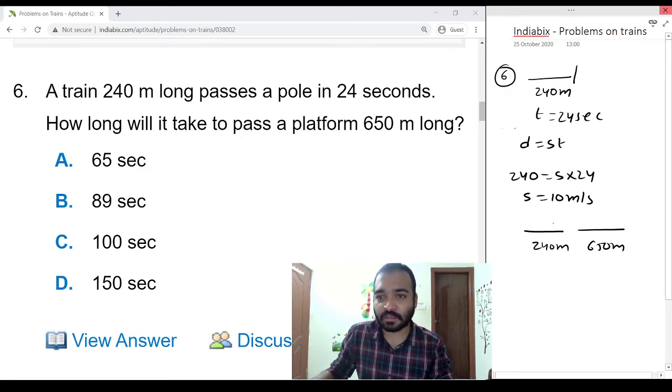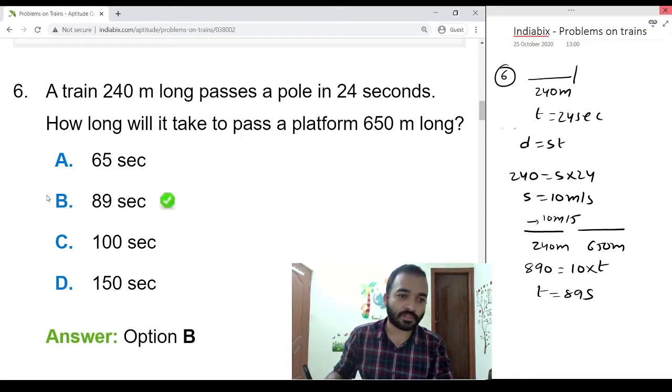240 meters plus 650 meters, its speed is 10 meters per second. So again, distance is 240 plus 650 equals 890, equals 10 times time. Time equals 89 seconds, so option B.